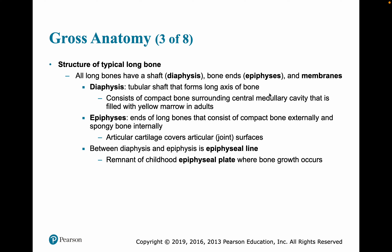The ends of the diaphysis are called the epiphyses. They have compact bone externally, but underneath is mostly spongy bone. There is articular cartilage covering the places where these bones form joints. In between the diaphysis and epiphyses is the epiphyseal line — the remnant of the epiphyseal plate, a cartilage structure that allowed the bone to grow lengthwise. When growth stops, the epiphyseal plate becomes the epiphyseal line.